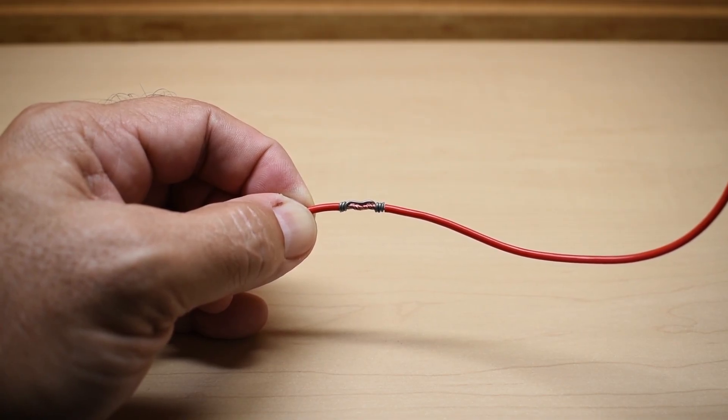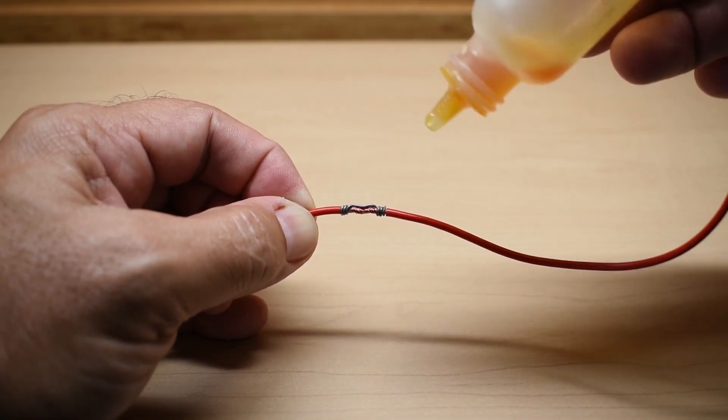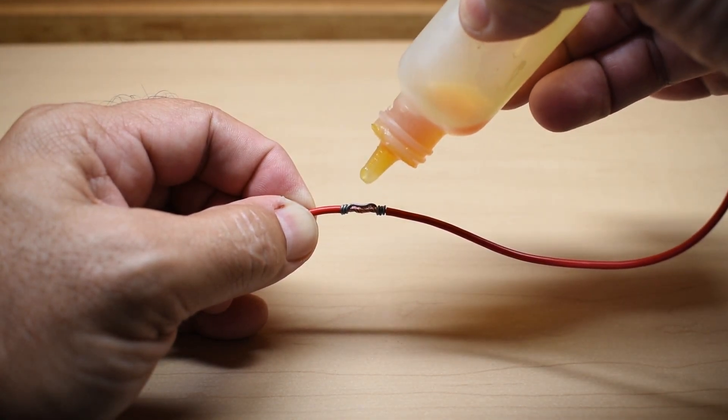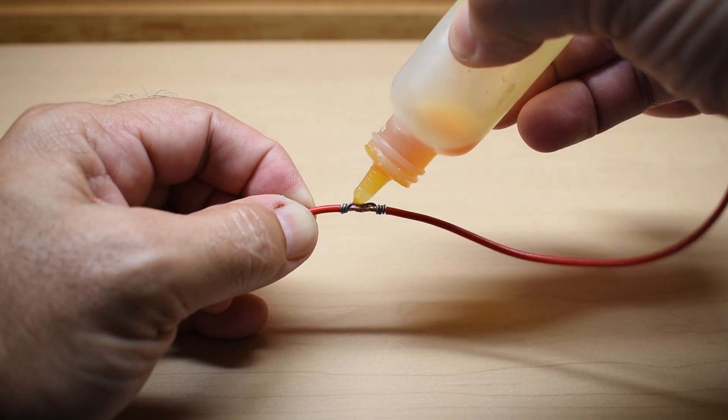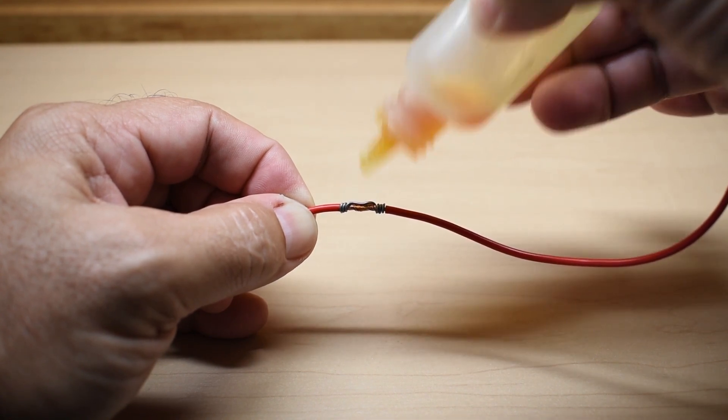Now we're going to take the liquid rosin, and we're going to apply two drops. Let's put one over there, and one over there.